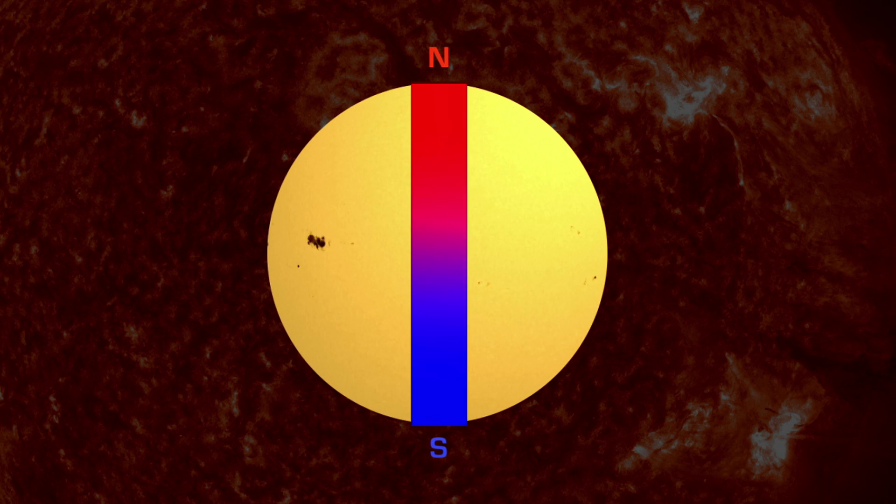Every 11 years, the Sun's poles flip. North becomes south, and south becomes north. So every 22 years, the poles return to the position where they started the cycle.